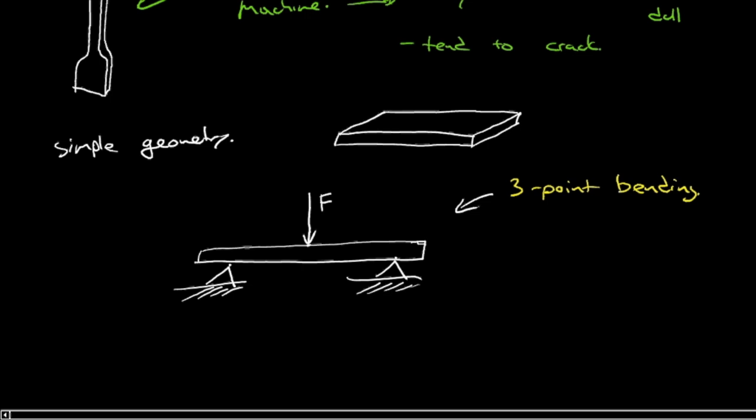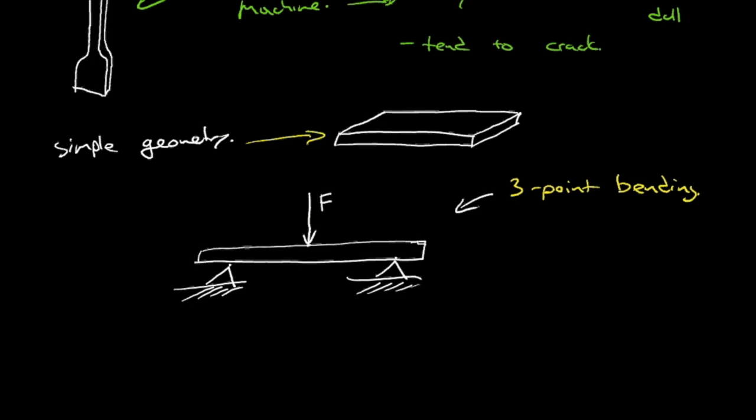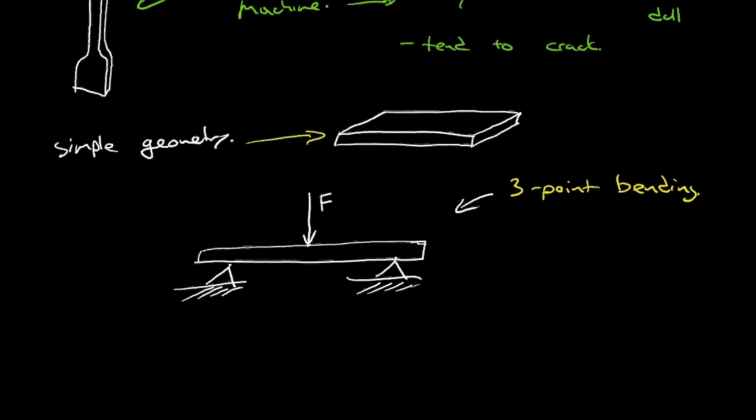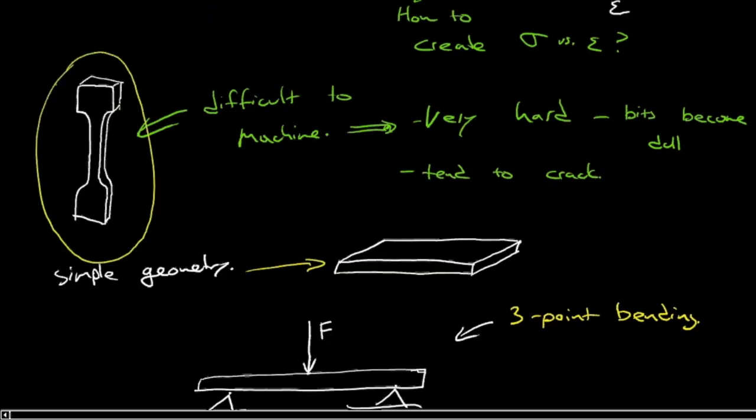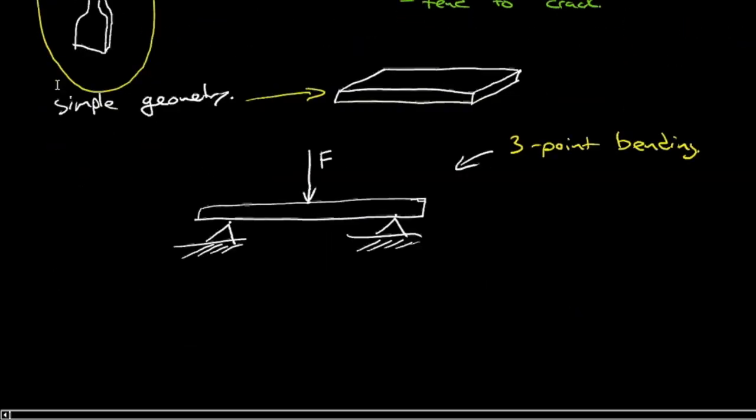It's easy to manufacture a rectangular cross-section beam, even with high-strength ceramic. You can cut them relatively easily with a diamond saw with enough coolant. It's relatively simple geometry, especially compared to these dog bone specimens for tensile testing. You can just support it on a couple spots and load it in the middle.